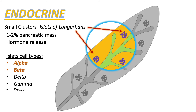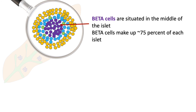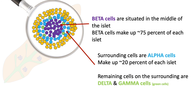Let's take a closer look at the pancreas. In this color representation of the cells within the islet, the purple cells in the center are the beta cells, comprising about 75 percent of the islet. The surrounding blue cells are the alpha cells, making up approximately 20 percent of each islet. The remaining surrounding cells are the delta and gamma cells. The yellow cells on the outside are the exocrine cells.